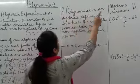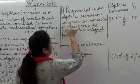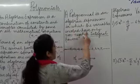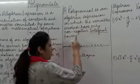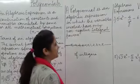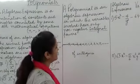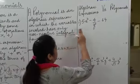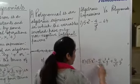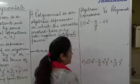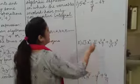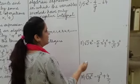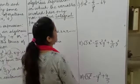A polynomial is an algebraic expression in which the variables involved have only whole numbers as their powers. So now let's apply this definition to some expressions to identify if these expressions are polynomials or not.